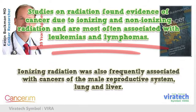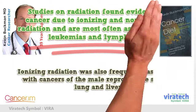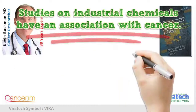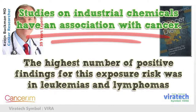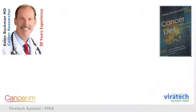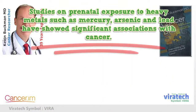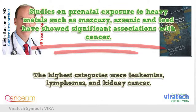Ionizing radiation was also frequently associated with cancers of the male reproductive system, lung, and liver. Studies on industrial chemicals have an association with cancer, with the highest number of positive findings for leukemias and lymphomas. Studies on prenatal exposure to heavy metals such as mercury, arsenic, and lead showed significant associations with cancer, with the highest categories being leukemias, lymphomas, and kidney cancer.